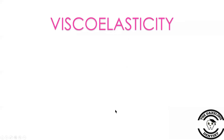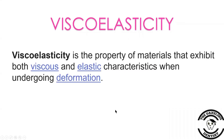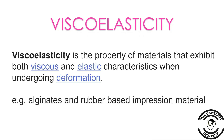Next is viscoelasticity. It is the property of materials that exhibit both viscous and elastic characteristics when undergoing deformation. Examples of this are alginates and rubber-based impression materials.